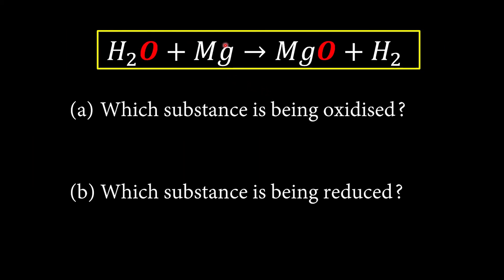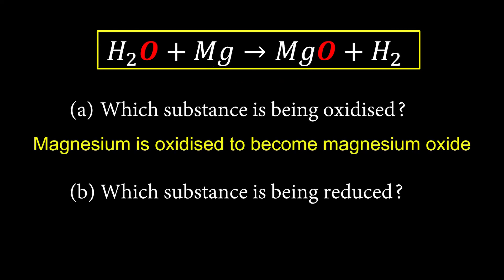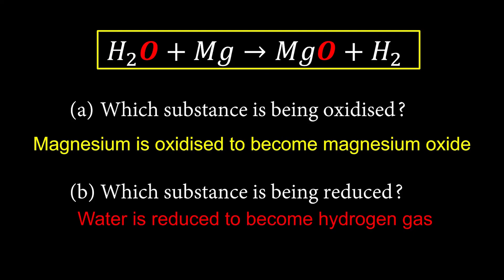Next: water combined with magnesium forms magnesium oxide and hydrogen gas. They are transferring in terms of oxygen. Magnesium gains the oxygen to become magnesium oxide, so magnesium is oxidized to become magnesium oxide. Which substance is being reduced? Whoever loses the oxygen is being reduced. Water (H₂O) loses the oxygen to become hydrogen gas, so water is reduced to become hydrogen gas.